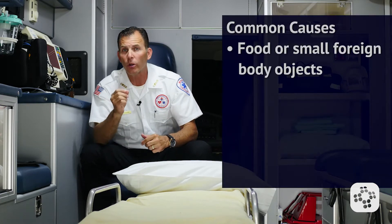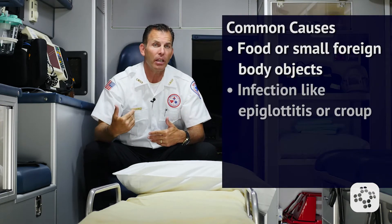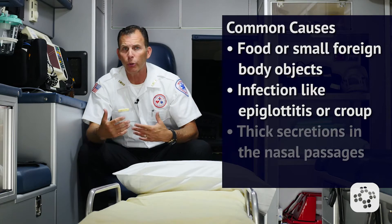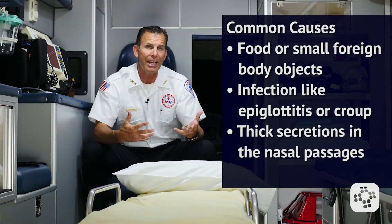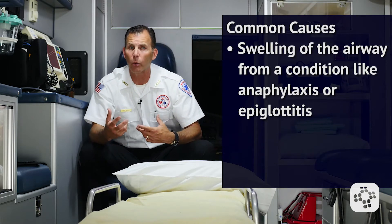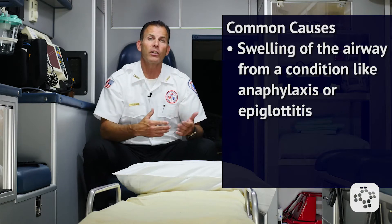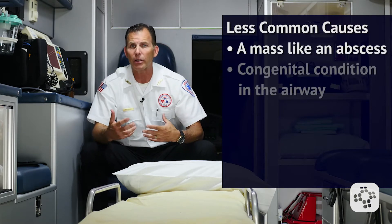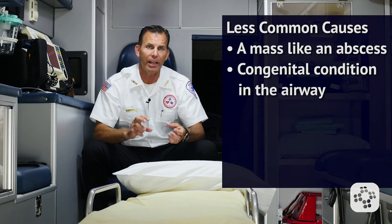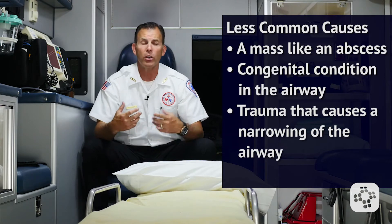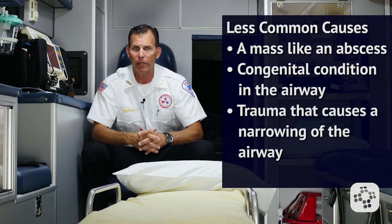Food or small foreign body objects, infections like epiglottitis or croup, thick secretions in the nasal passages, or swelling of the airway from conditions like anaphylaxis or epiglottitis are all common causes of upper airway obstruction. Less common causes include a mass such as an abscess, a congenital condition, or trauma that causes narrowing of the airway.